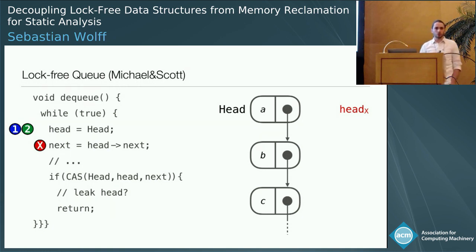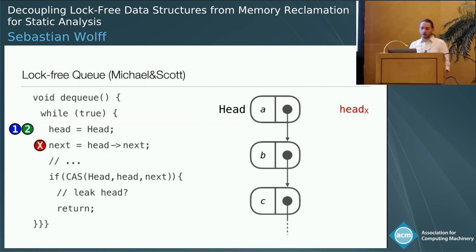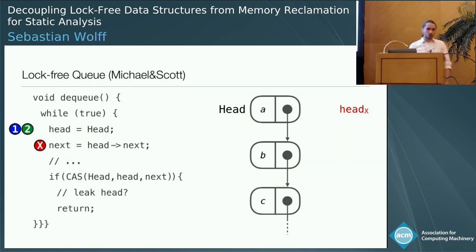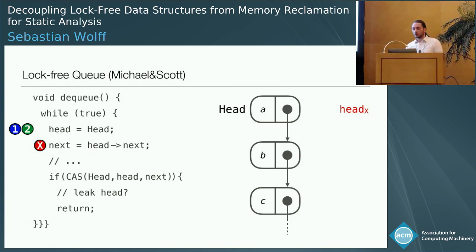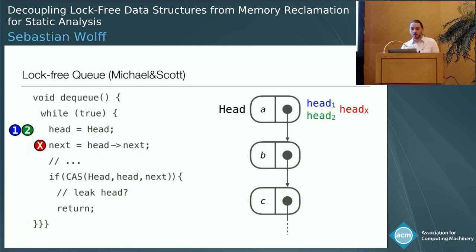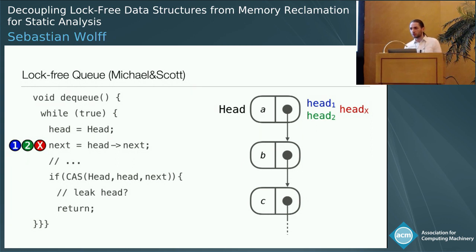From now on, we focus on threads one and two to see how lock-free code works. Usually, the approach to programming lock-free data structures is to traverse the data structure without any synchronization and compute a set of updates that the thread wants to perform. But it does not apply the changes to the shared structure — it stores them locally. Only in the last step does it check whether the data structure has changed since the thread began its traversal. The threads start off by traversing the data structure, reading the shared head pointer into local copies, completely in parallel without synchronization.